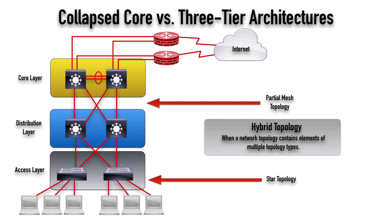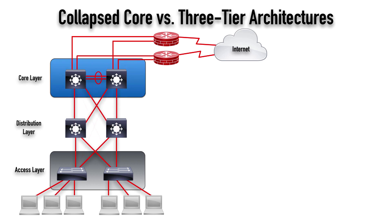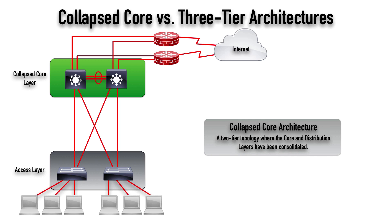However, some networks are simply not large enough to justify all these multi-layer switches. Maybe we don't need a core layer and a distribution layer. There is another approach called a collapsed core architecture. If we take the distribution layer and combine it with the core, what we end up with is a collapsed core layer. We still have redundant interconnections between our access layer switches, but we've eliminated a layer. This might not work well for a large campus with lots of buildings to interconnect, but for some installations — maybe within a single building or a couple of buildings — this can be a great solution. This is a two-tier topology, made up of the access layer and the combined core and distribution layer consolidated into the collapsed core layer.